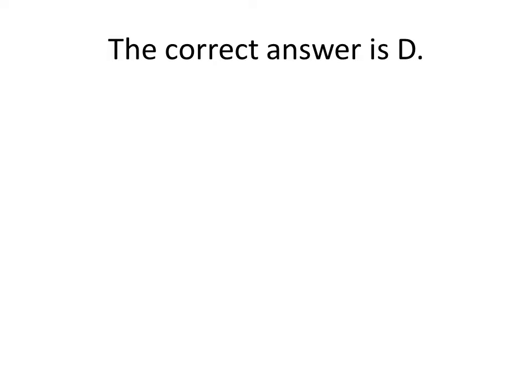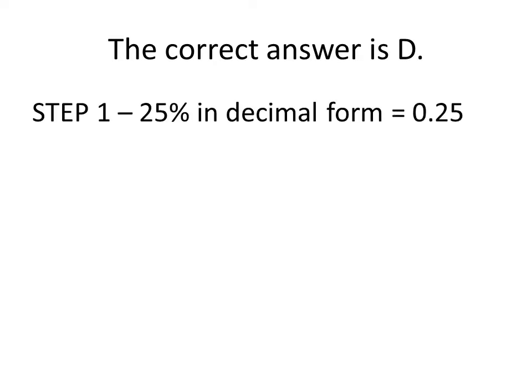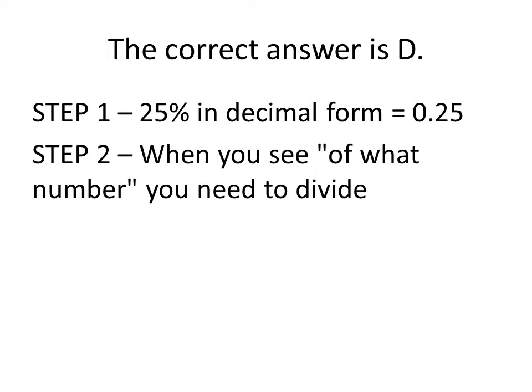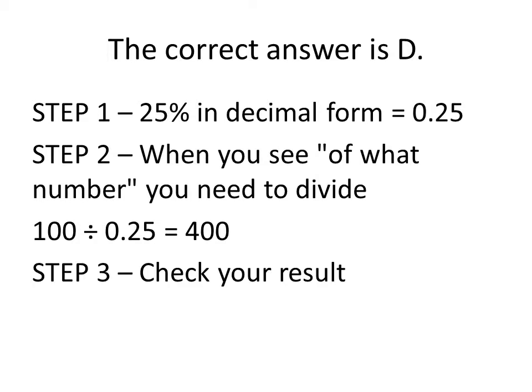The correct answer is D. For your first step, you need to express 25% in decimal form. Remember that to express a percentage as a decimal, you remove the percent sign and move the decimal point two places to the left. For step two, when you see of what number in a problem, it means that you need to divide. 100 divided by .25 equals 400, which is our answer. For step three, you can check your result if you wish. 400 times .25 is 100, which was the figure in our original question.